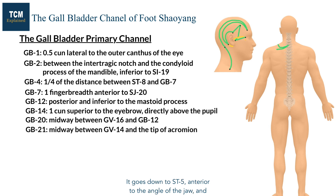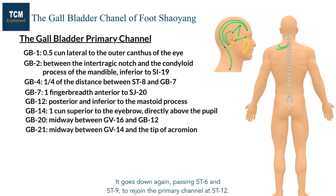It goes down to Stomach 5 anterior to the angle of the jaw and comes back to the infraorbital region, meeting with Bladder 1. It goes down again, passing Stomach 6 and Stomach 9, to rejoin the primary channel at Stomach 12.